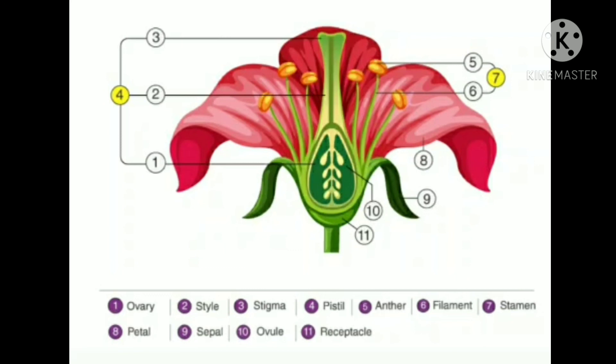The labeled parts include: ovary at the center, style, and stigma. The broad, colorful parts of an open flower are called petals. Different flowers have petals in different colors. The green parts at the bottom of the flower are called sepals. You can take a flower and observe the petals and sepals yourself.